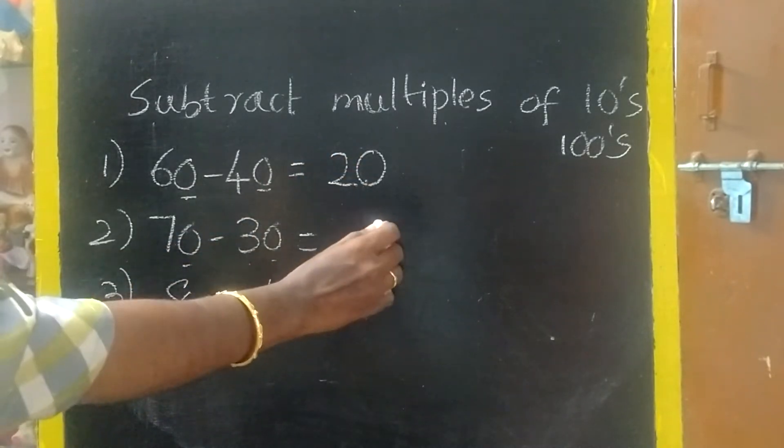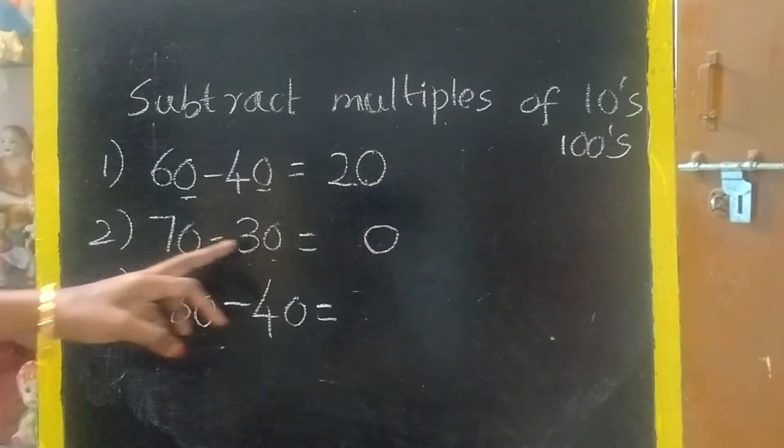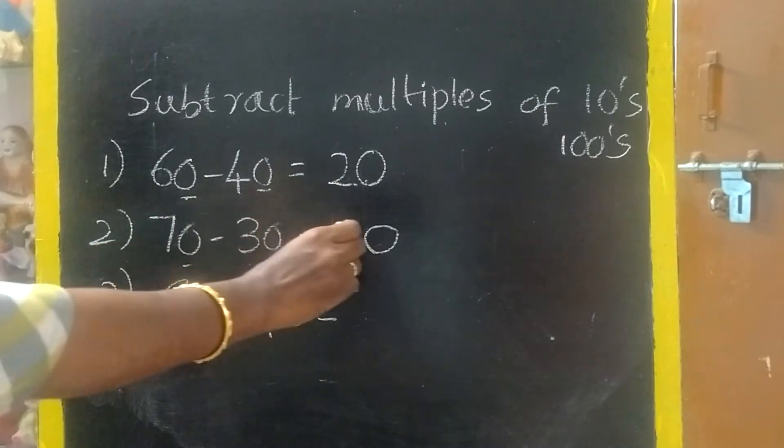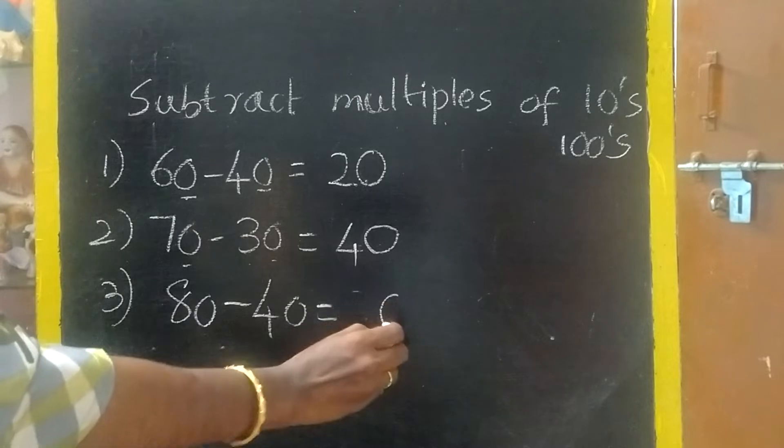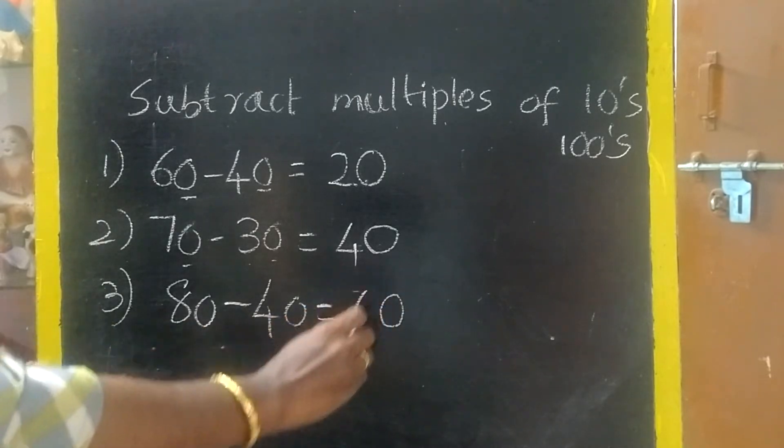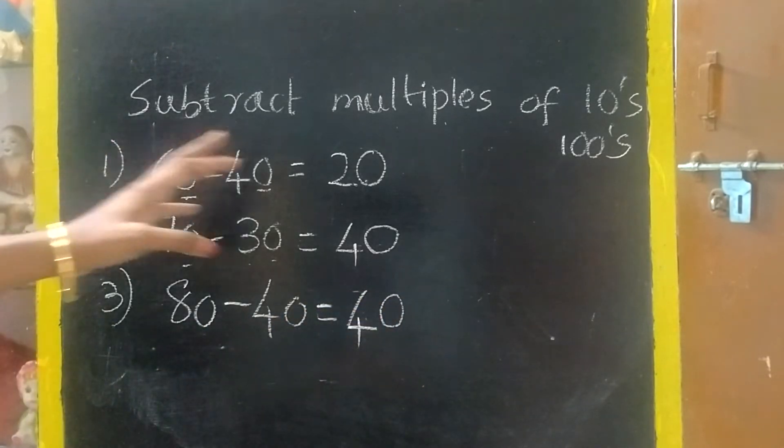0 minus 0, 0. 7 minus 3, 4. So, the answer is 40. 0 minus 0, 0. 8 minus 4, 4. This is multiples of tens.